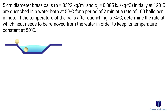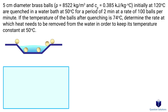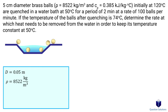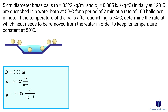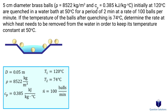Let's take a look at one last example. We have brass balls that get quenched in water, and we have to figure out the rate at which heat needs to be removed from the water to keep the water temperature constant at 50 degrees Celsius. The diameter of the balls is 5 centimeters or 0.05 meters, the density is 8522 kilograms per cubic meter, the specific heat is 0.385, the initial temperature of a ball is 120 degrees Celsius, the final temperature is 74 degrees Celsius, and 100 balls per minute are cooled.